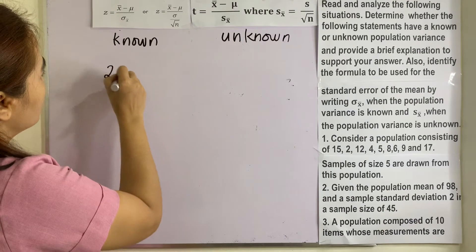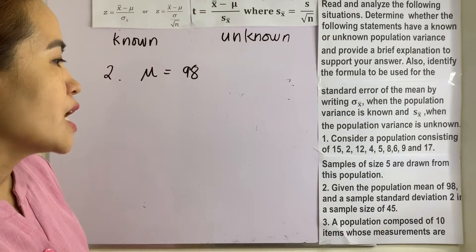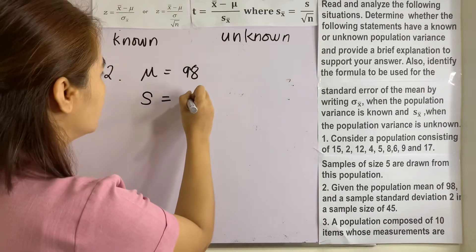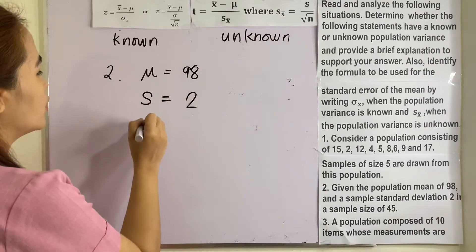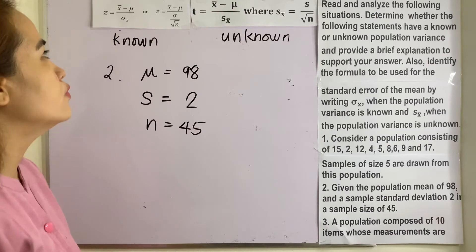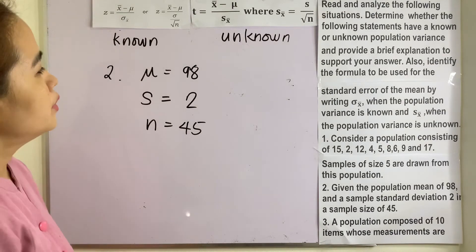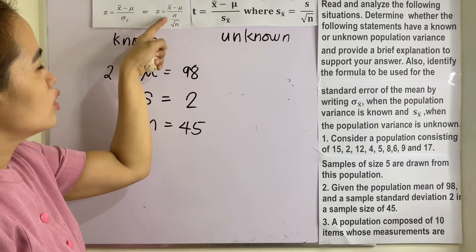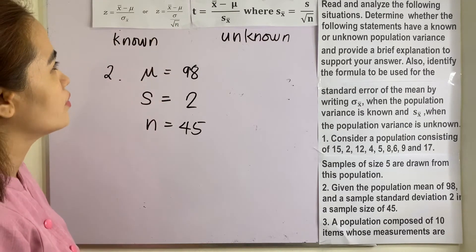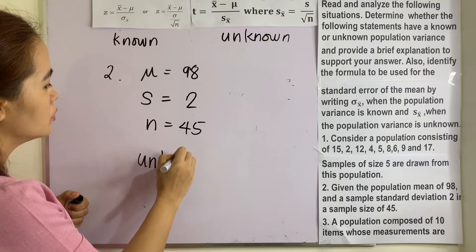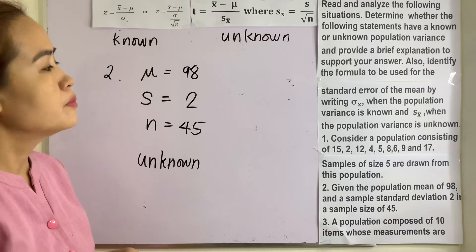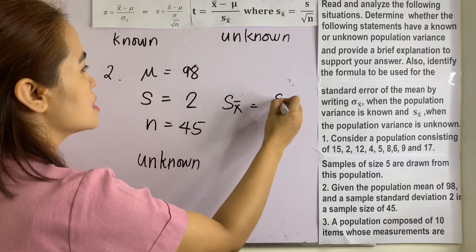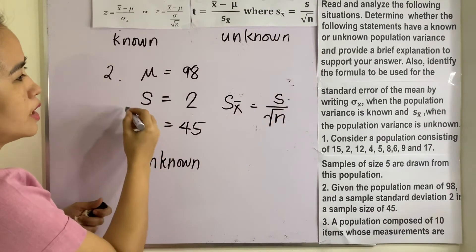Example 2: given the population mean mu equals 98, and a sample standard deviation S equals 2, and a sample size of 45. Do you think we can solve for the population variance here? In order to get the variance we need the population standard deviation sigma, but we do not have it — we only have the sample standard deviation S. Therefore, this is an unknown population variance. The standard error of the mean in this case is S over the square root of n, and we can solve it since we have S and n.